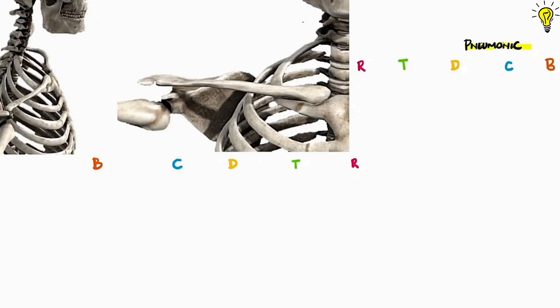The brachial plexus has 5 zones. Mnemonic to remember is Ryan Taylor drinks cold beer. So R for roots, T for trunks, D for divisions, C for chords and finally B for branches.